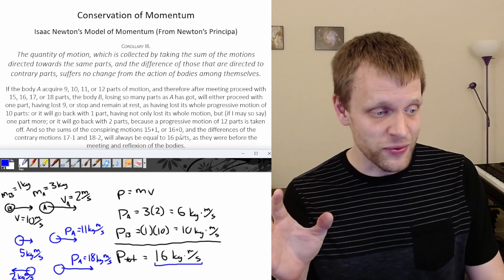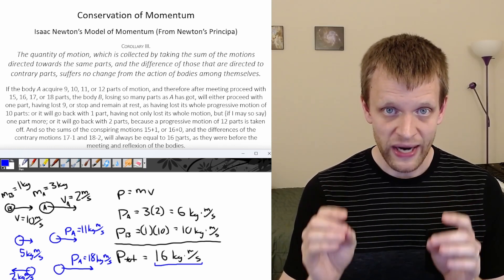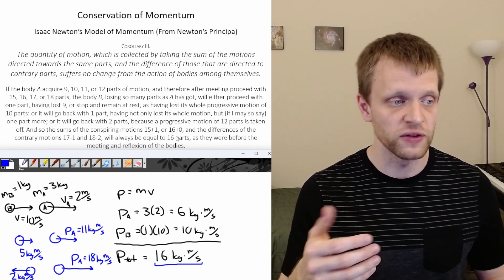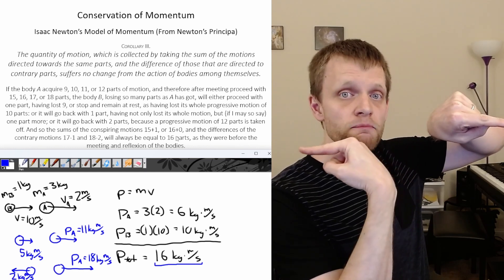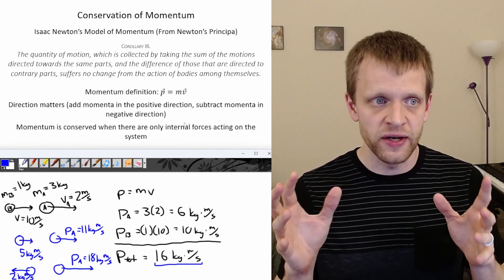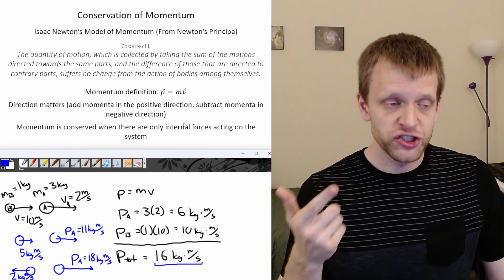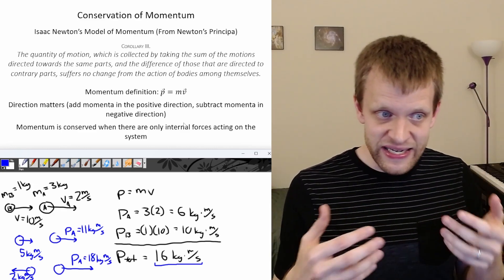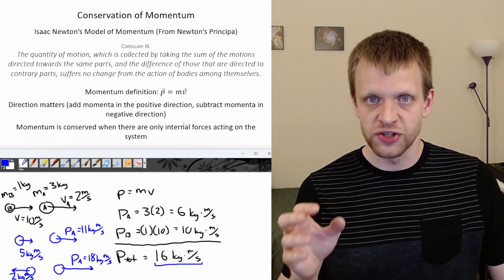To summarize Isaac Newton's model of momentum: the definition of momentum is mass times velocity, direction matters — objects going in the positive direction have positive momentum, objects going in the negative direction have negative momentum — and this momentum is conserved when there are only internal forces acting on the system.